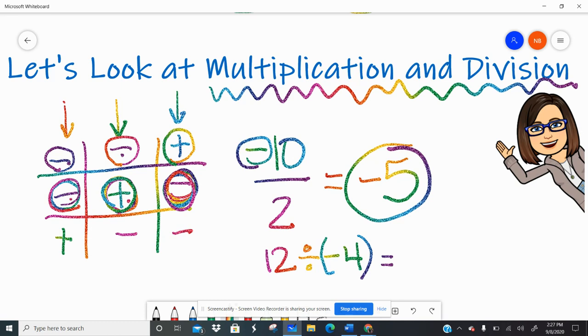So 12 divided by negative 4. I'm going to ignore the signs. 12 divided by 4 is 3. And I have a positive and a negative, which means my answer is negative because those are mixed.